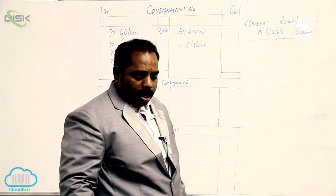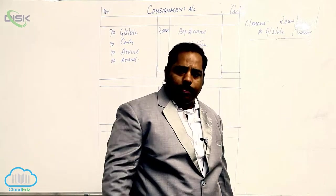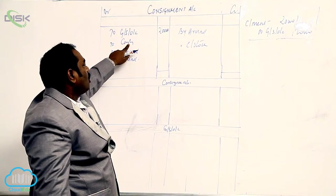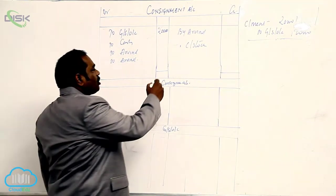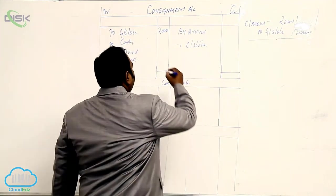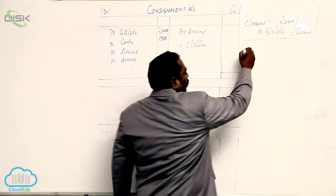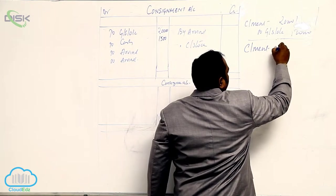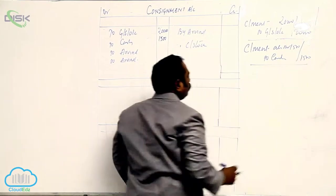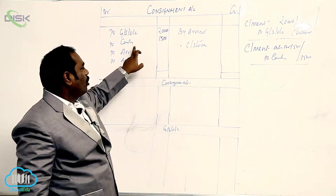Arvind spent 1,000 towards transport and 500 towards insurance. Whenever expenses are met by the consignor, all expenses should be debited to the Consignment Account. Cash is going out, so the entry is Consignment Account debit, to Cash, for 1,500.